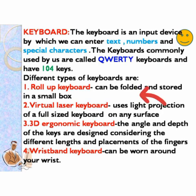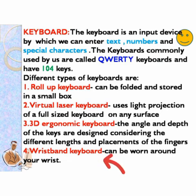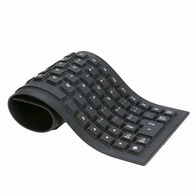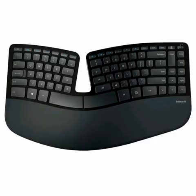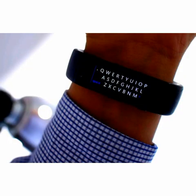The roll-up keyboard can be folded and stored in a small box. The virtual laser keyboard uses light projection of a full-sized keyboard on any surface. The 3D ergonomic keyboard is designed considering the different lengths and placement of the fingers. The wristband keyboard can be worn around your wrist. Here are pictures of the roll-up keyboard, 3D ergonomic keyboard, virtual laser keyboard, and wristband keyboard.